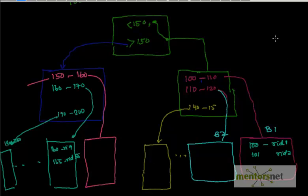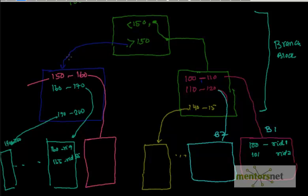So the idea is that instead of storing them in a linked list in serial order, we store them in something that looks like a tree. In this tree, the upper blocks are called branch blocks, and the last ones are called leaf blocks. Why leaf blocks? Because they do not have any children — this is where the tree ends. The branch block contains a condition and a pointer to the next block, while the leaf block contains the actual key value — the employee ID — and the actual address.